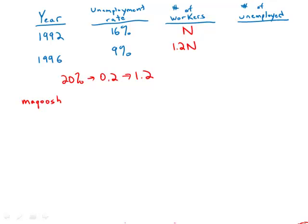So it's very important to be perfectly clear on how to handle percents. So back to our percents here, we want to go from the total number of workers to the total number of unemployed. So in 1992, 16% of this N were unemployed, so that is 0.16N. In 1996, 9% of this total is unemployed, so that is 0.09 times 1.2N, and a little multiplying, that equals 0.108N.